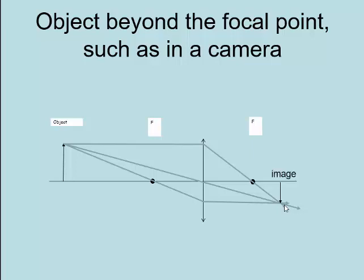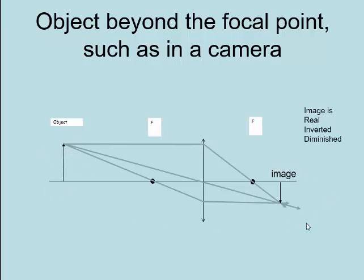This is our image. There are things we can say about it. In this case the image is real, because these are actual rays that travel through that point. It is inverted — the arrow is upside down compared to the object. And it is diminished, meaning it's smaller — the object arrow is bigger than the image. Another way of telling that the image is real is that the object is on one side of the lens and the image is on the other side.